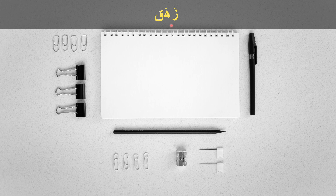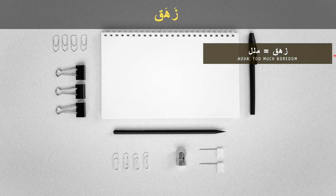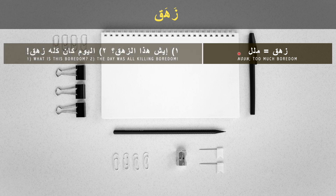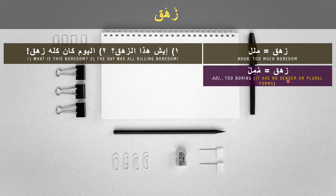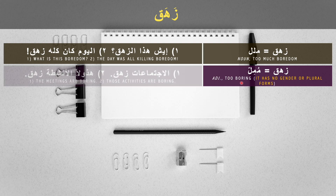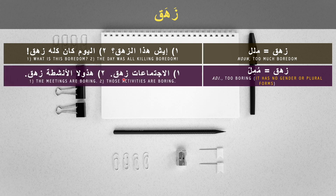The meaning used today in spoken dialects is not really about killing — it means 'malal', too much boredom, in a killing way. For example, 'ishad zahag' means 'what is this killing boredom!' and 'the day was all killing boredom.' The second use of zahag is as an adjective to describe something excessively boring, like saying the meetings are too much boring, or these activities are a total boredom.